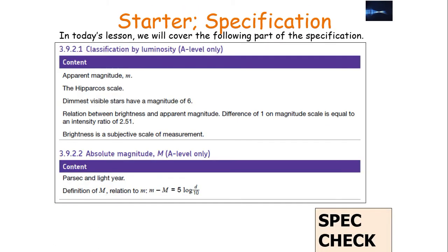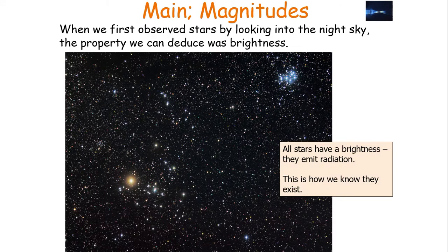We're going to cover the following part of the specification in the A-level AQA astrophysics option. We're going to look at classification by luminosity and absolute magnitude. When we first observe stars by looking at the night sky, the first property we can deduce is the brightness of the star.